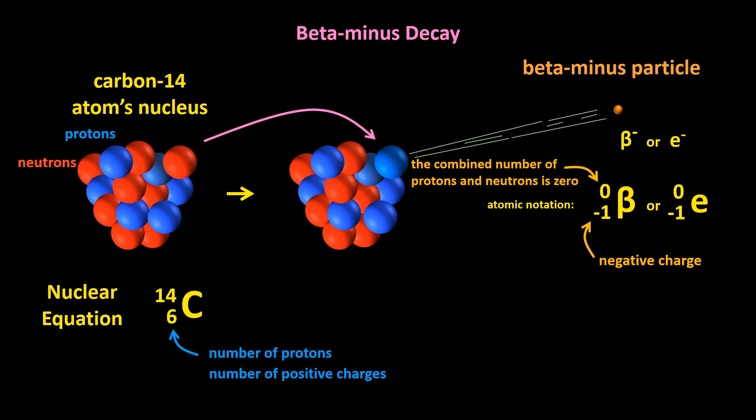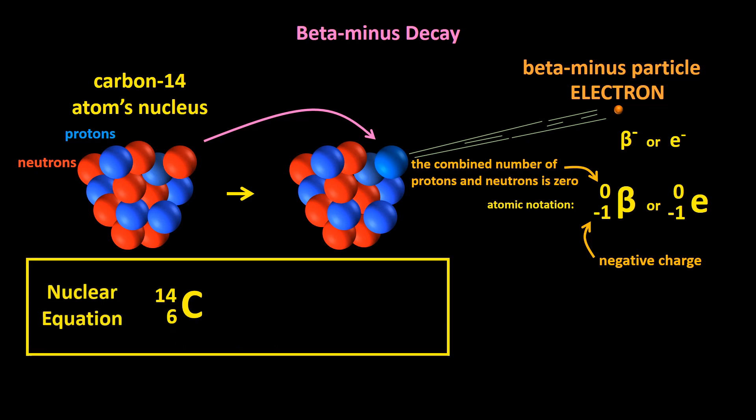So what particle has a charge of minus 1 and is not made up of protons and neutrons? Well, an electron. So let's write the nuclear equation. There are 6 protons and 8 neutrons in the nucleus of a carbon-14 atom, which here is the parent nucleus. A beta minus particle is emitted, which we can write in, and we can then determine what the daughter nucleus is.